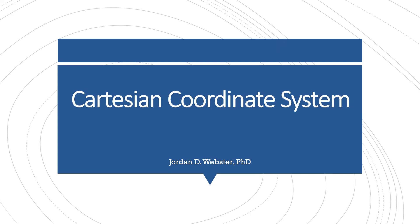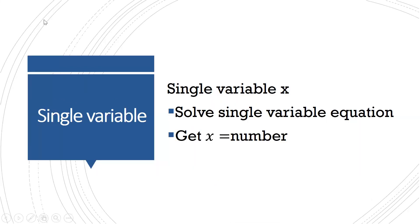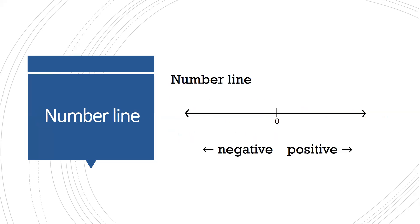We're going to look at the Cartesian coordinate system in this video. When we think about a single variable x, or solving for a single variable equation, we usually get an answer that says our variable has to be equal to a number. And when we want to display that, we can display that on a number line.